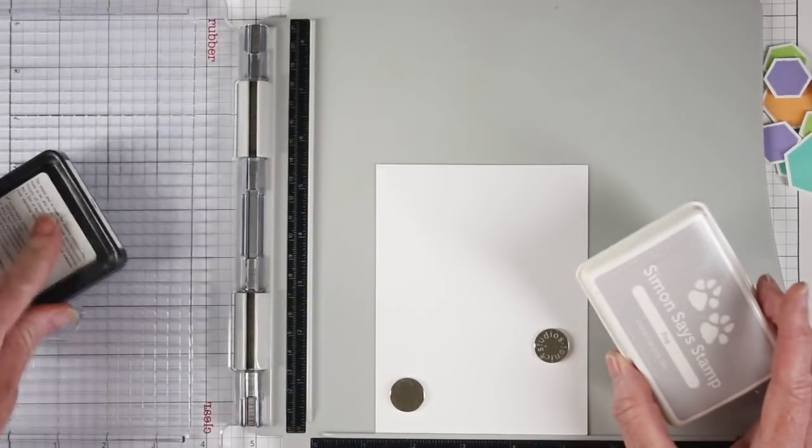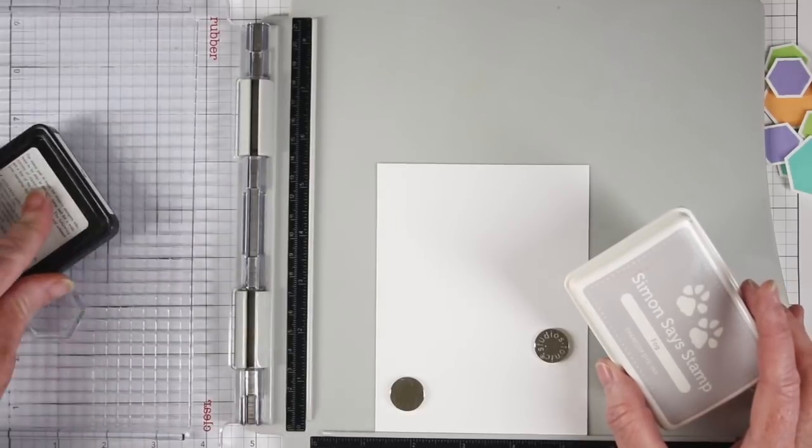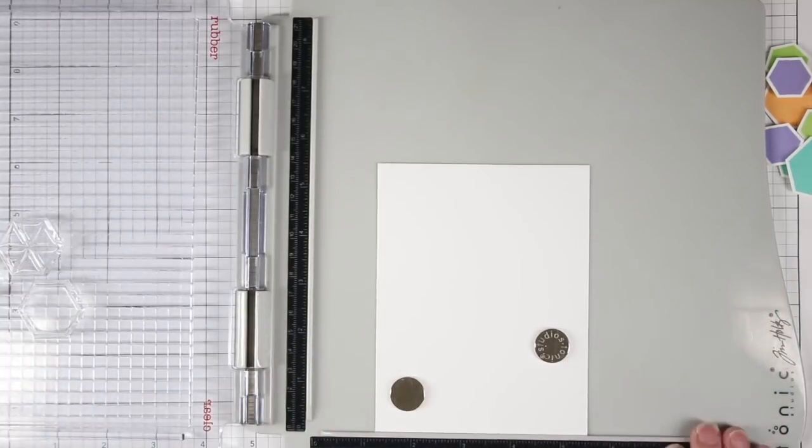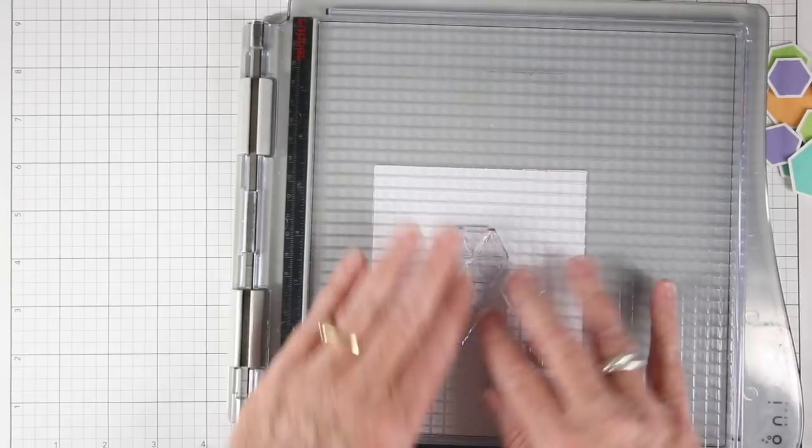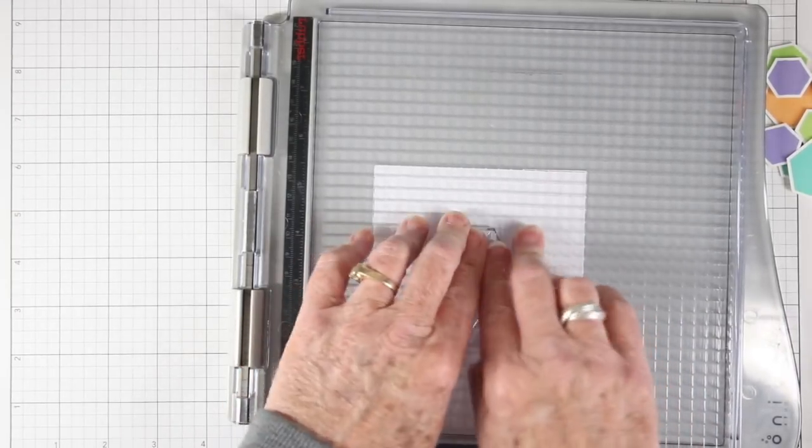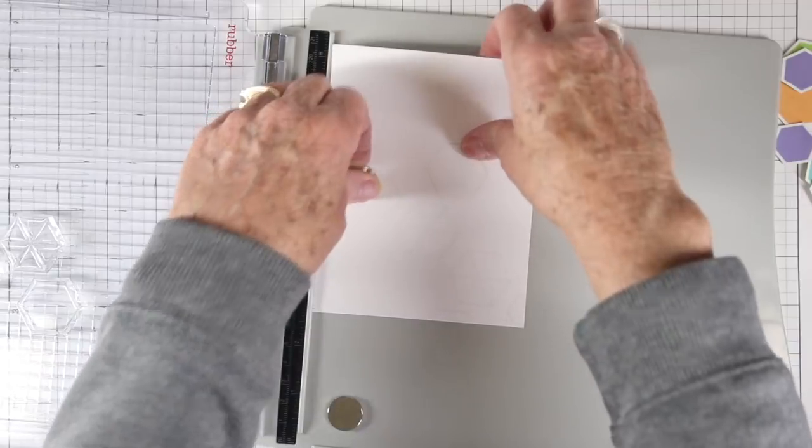I want to do something a little bit different for my background. I have the outline stamps on my stamp platform and I'm inking them up with fog ink for just a real subtle look. I'll be continuing stamping until I have the entire background filled up.